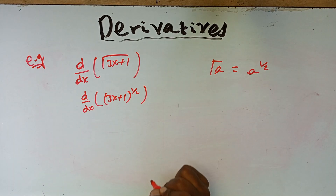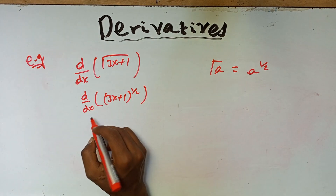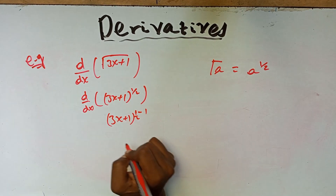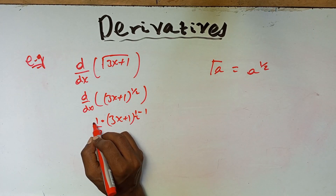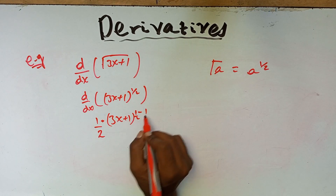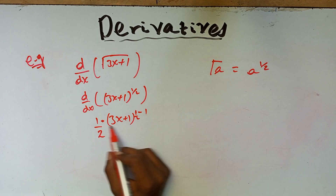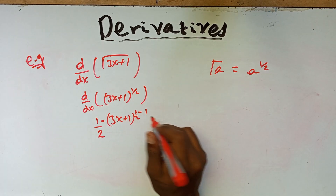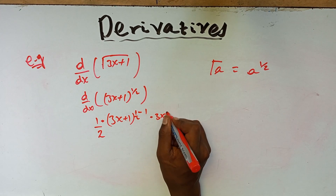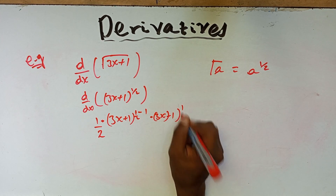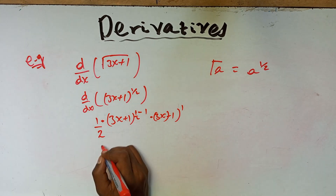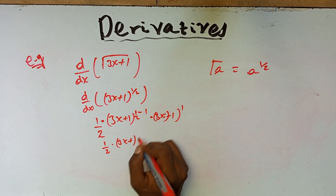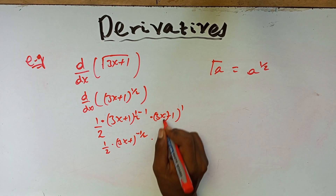We apply the power rule: bring down the exponent one over two and reduce the power by one, giving (3x plus 1) to the power of one over two minus one, which is minus one over two, multiplied by one over two. Then by the chain rule we also differentiate the inner part (3x plus 1).